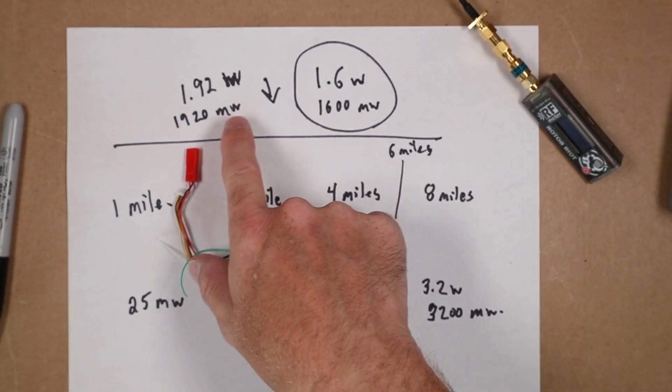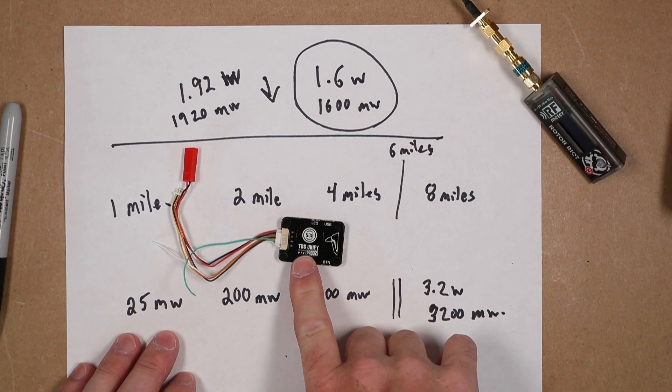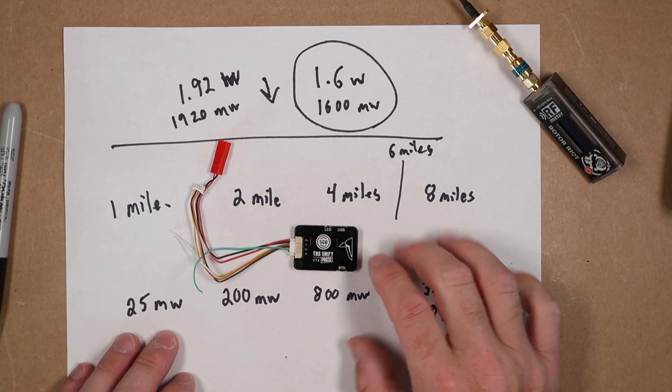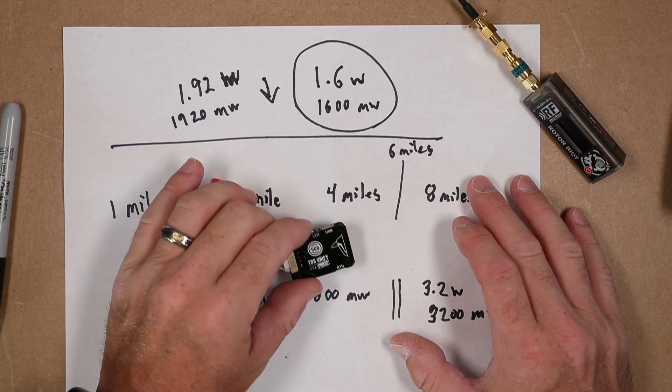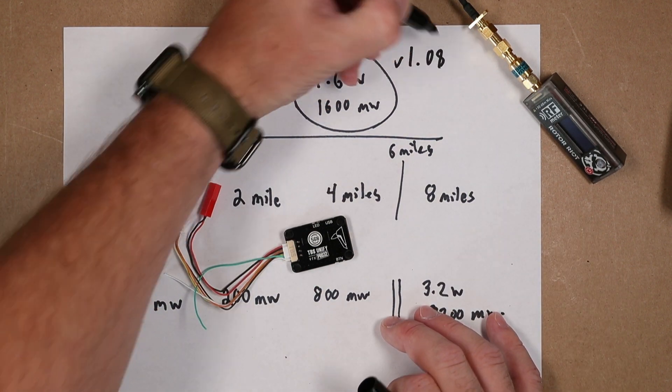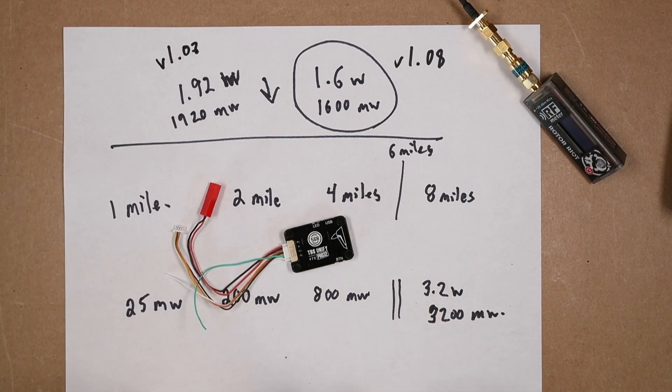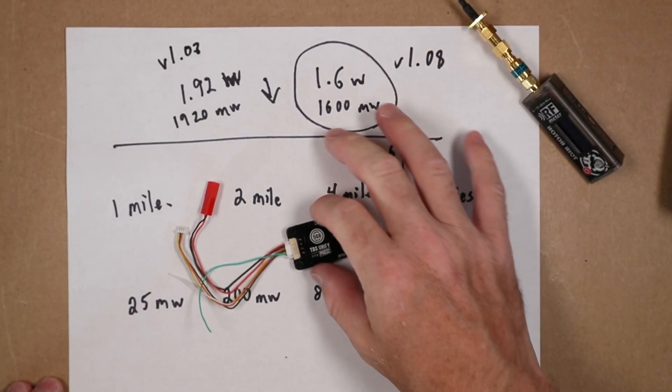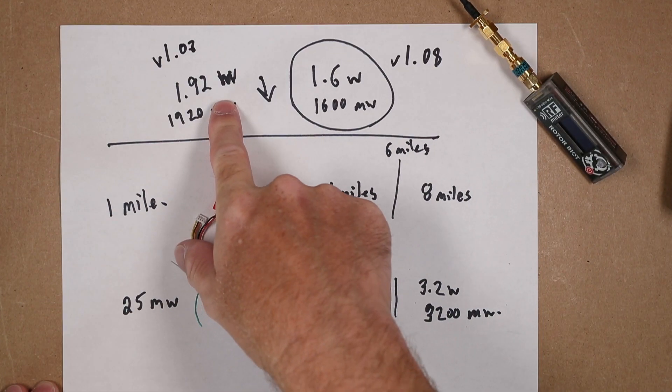I think TBS downgraded the firmware to this 1.6 watts to keep these devices from the general public from burning out. I don't think there's anything nefarious about it, I don't think there's anything to worry about. Me personally if the device is on the 1.08 firmware, right I'm going to show you 1.08 is the new firmware and 1.07 is the old firmware, I'm not upset with this device at 1.6 watts. My other devices that are up here at 1.07 and 1.92 watts I will not be upgrading these.